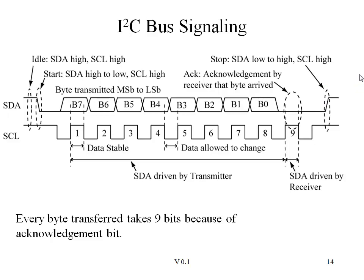In between those start and stop points, a series of bytes will be transmitted and received. Bytes are transmitted from the most significant bit down to the least significant bit. After eight bits are transmitted, a ninth bit — the acknowledge bit — is then sent by the receiver to indicate whether the transmission was successful or additional steps need to be taken. So notice that every byte transferred takes nine bits, not eight, because of that additional acknowledge bit.